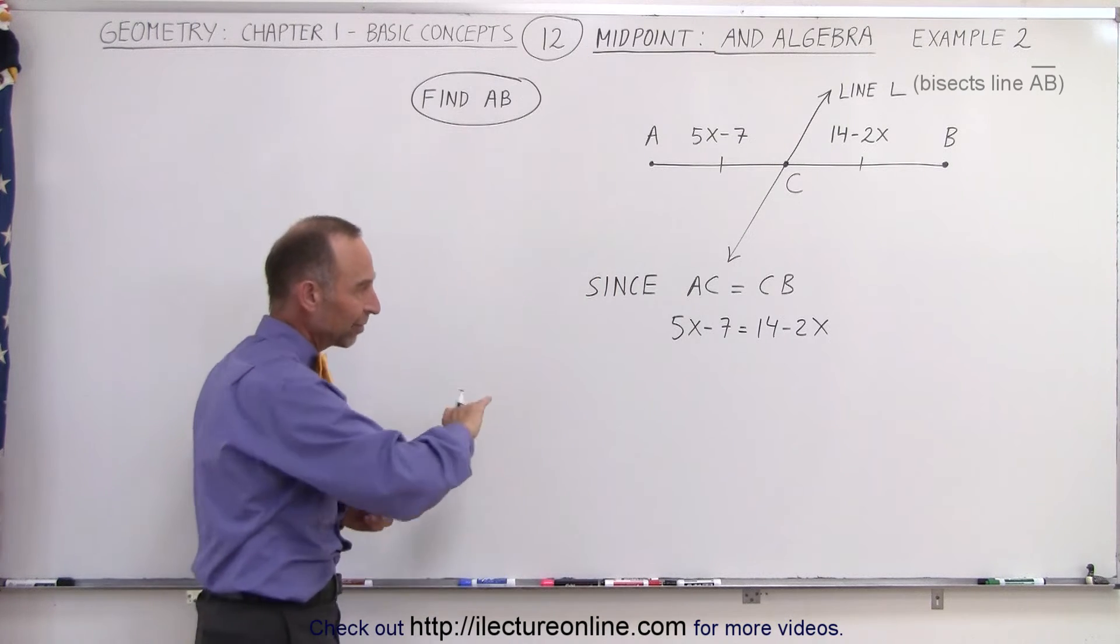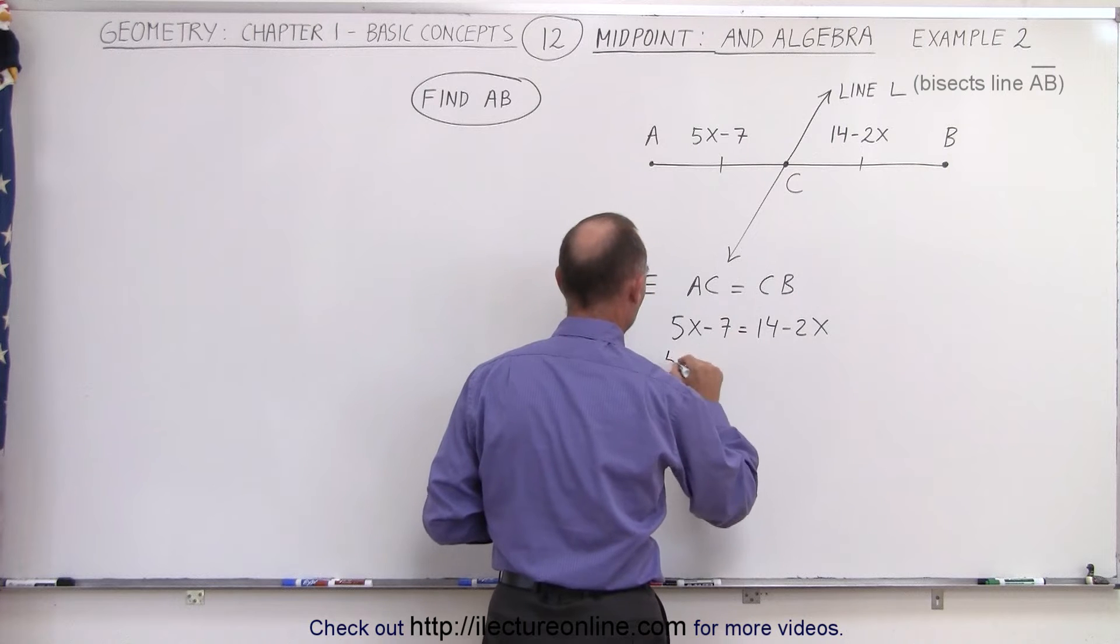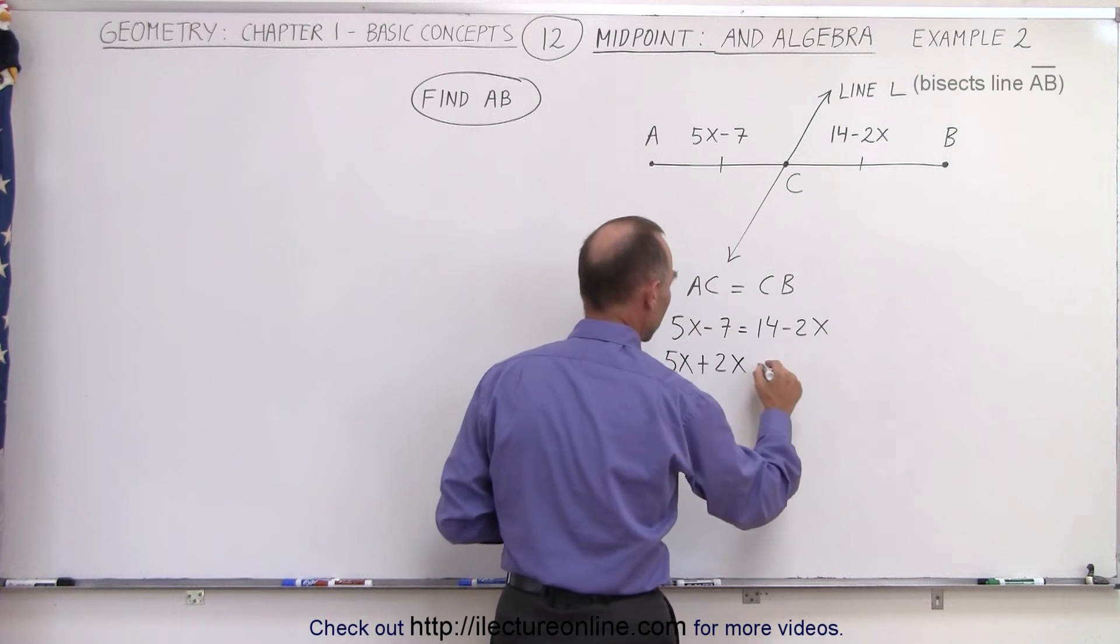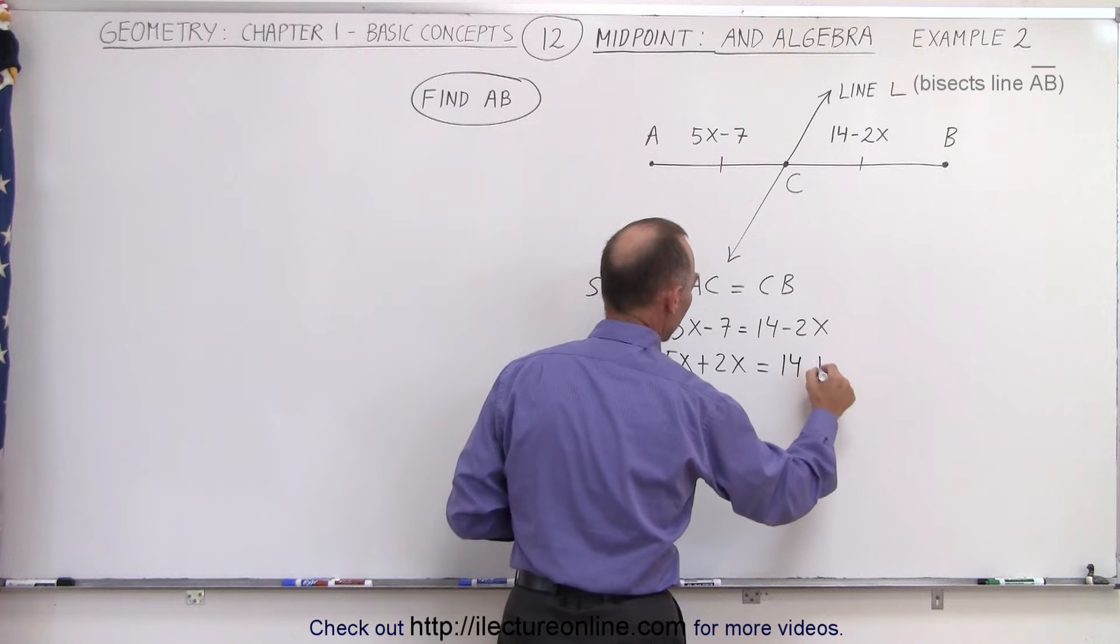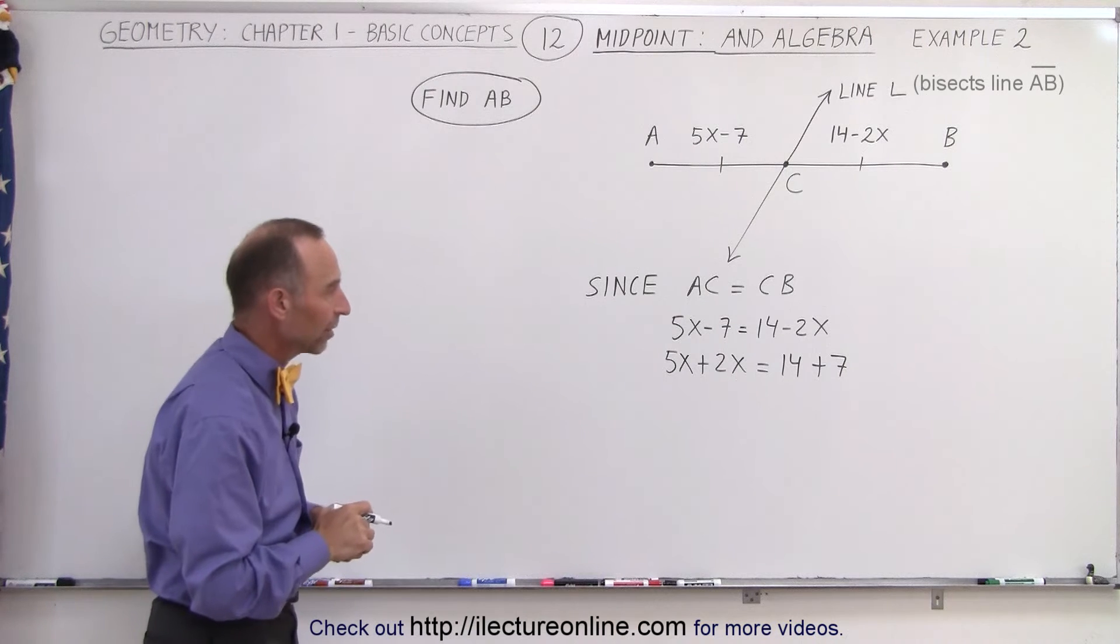So now we're going to move all the x's to one side, everything else to the right side. So 5x minus 2x becomes 5x plus 2x when we move the 2x over here, is equal to 14 plus 7 because the negative 7 becomes a plus 7 when we move it to the other side of the equal sign.